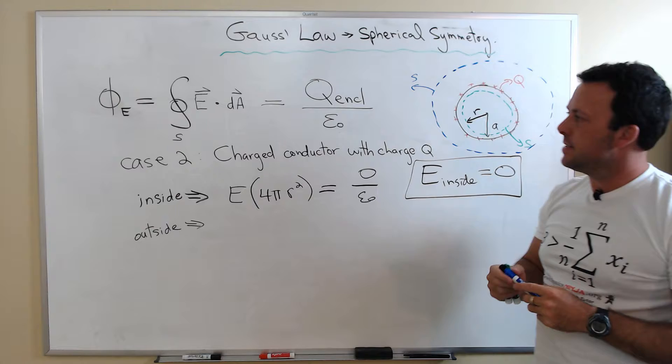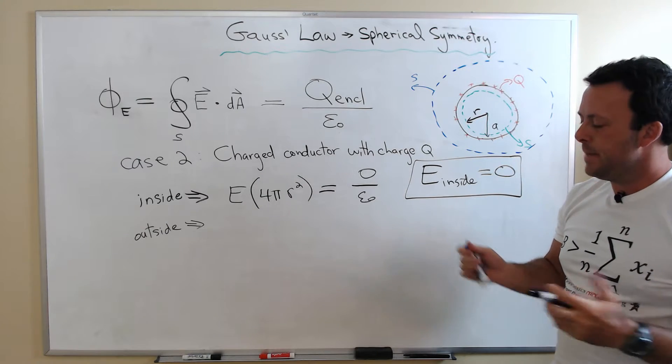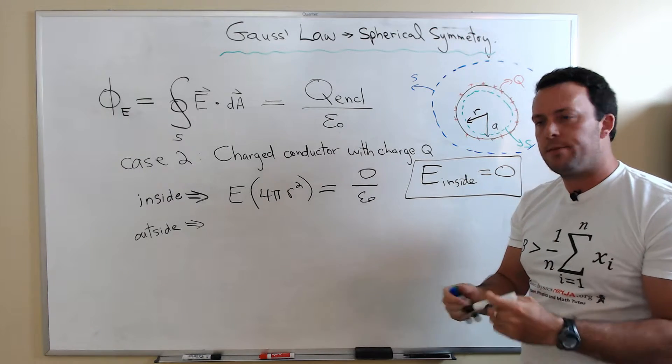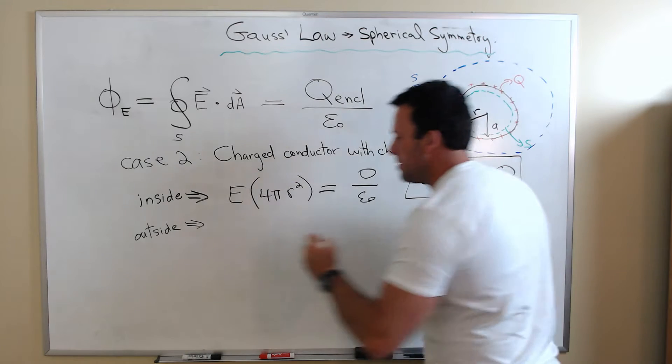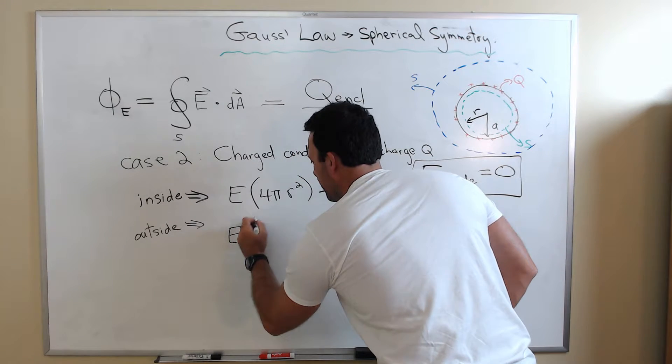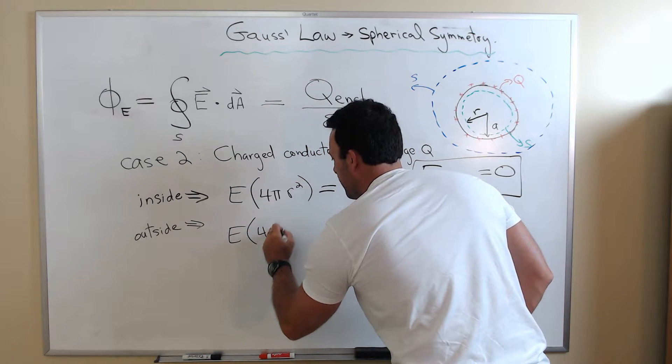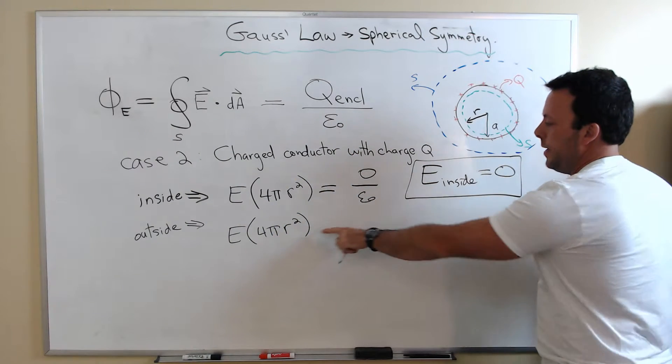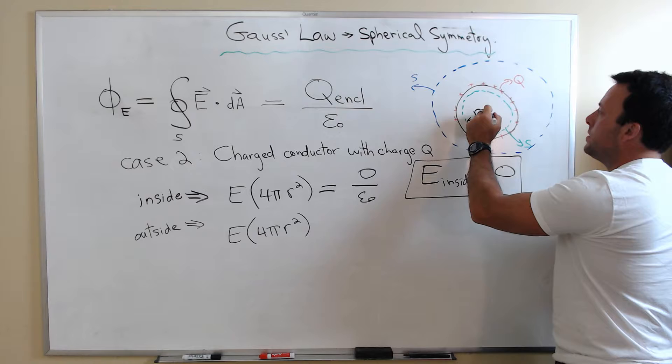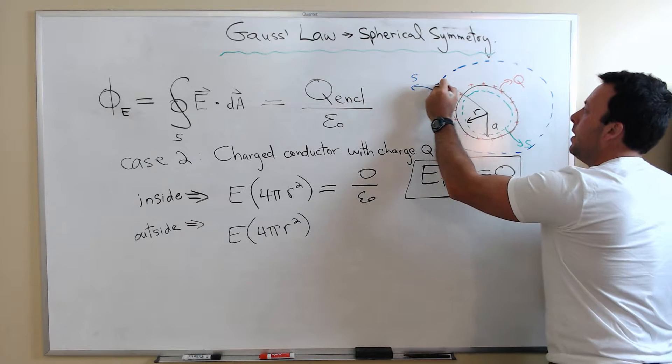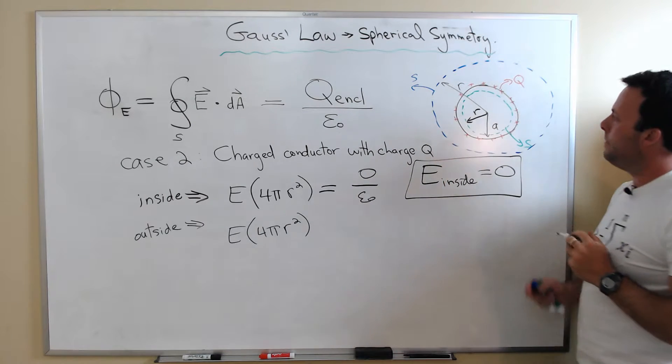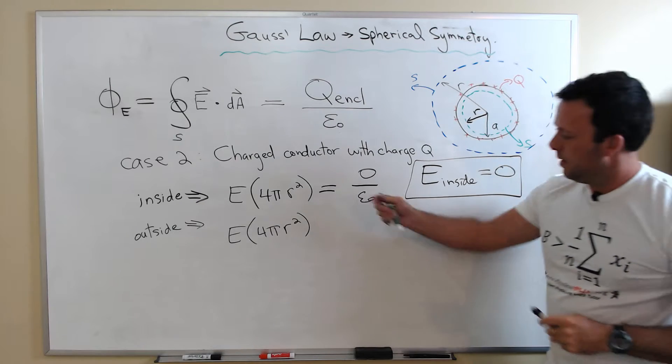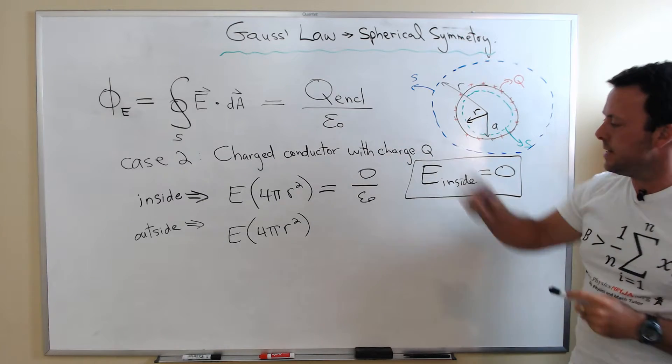Let's evaluate the left-hand side of Gauss's Law. Again, I have a spherically symmetric object. The left-hand side of Gauss's Law is always the same. Now, the radius for this Gaussian surface is the outside one. And that has to be equal to the right-hand side of Gauss's Law.